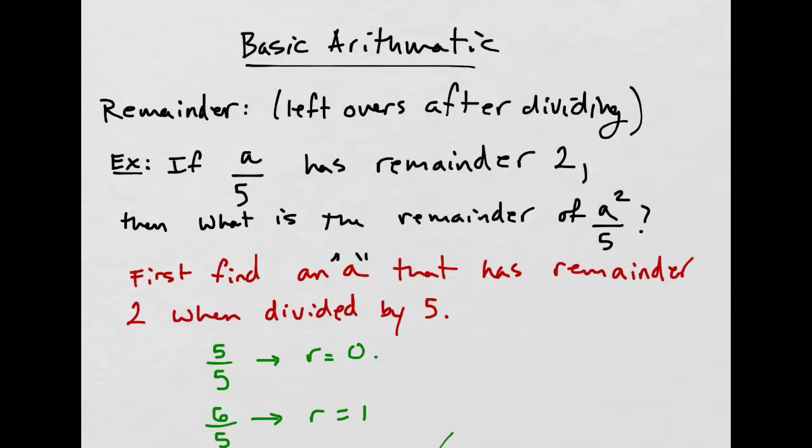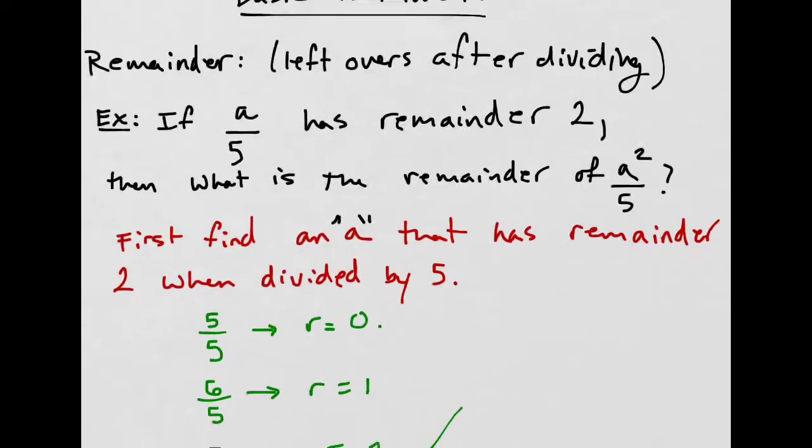We have a question here. If a divided by 5 has remainder 2, whatever number this is, when you divide it by 5 you get a 2 remainder, then what is the remainder of a squared? The first step is to find an a value that gives you a remainder of 2.